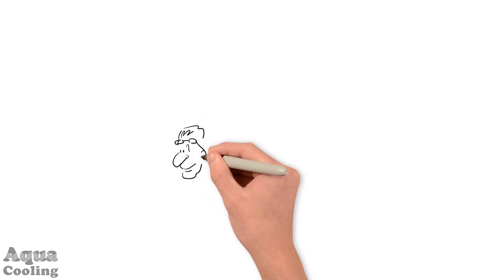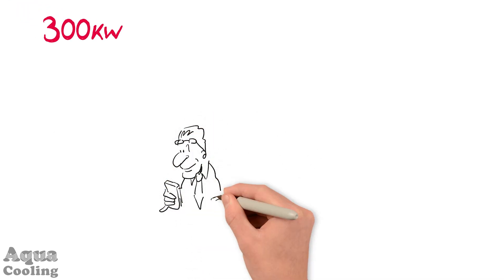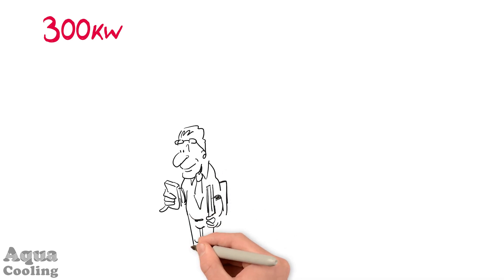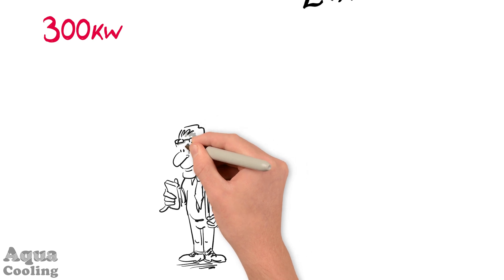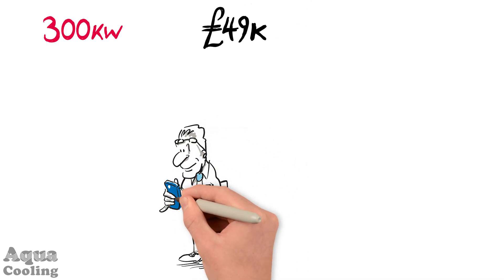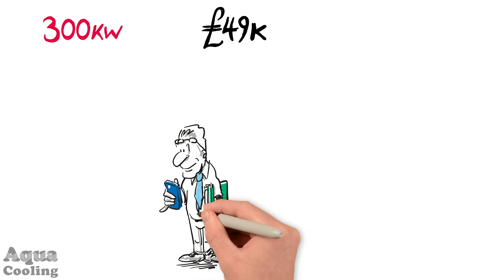So how much could you save? A typical 300kW system operating around 15C fluid temperature would roughly save 49,000 pounds every single year, which is significantly more than the typical cost of installing a free cooling system.